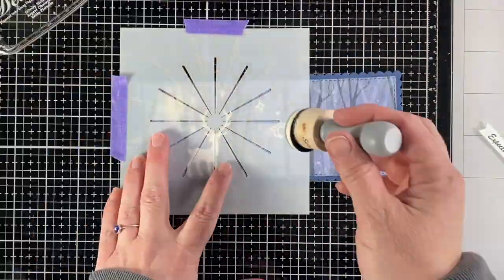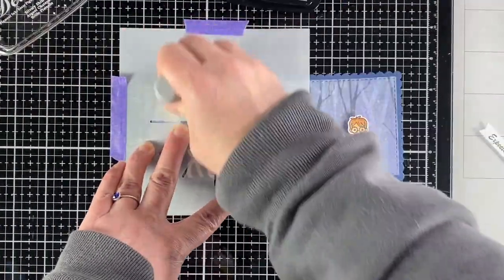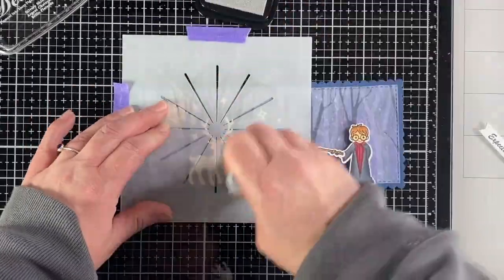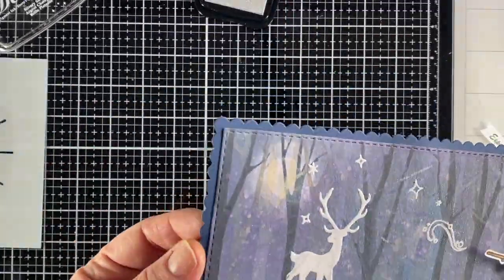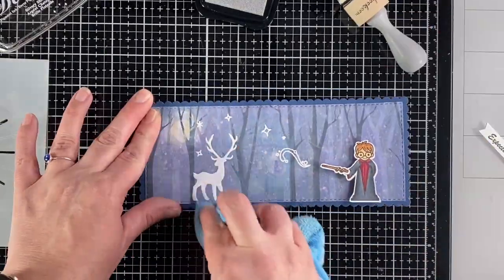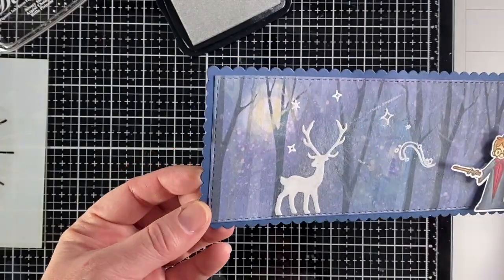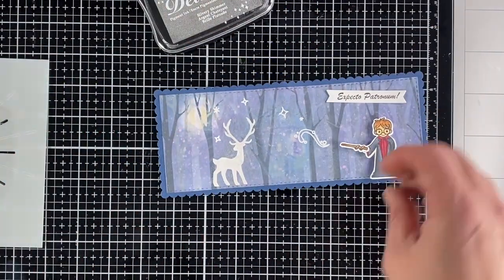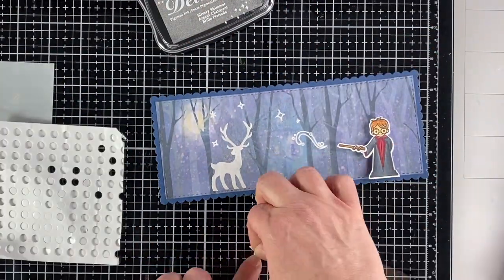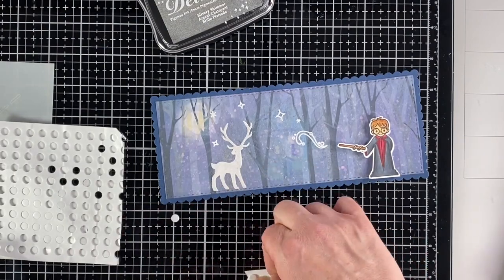Then as you can see that was when I went back and added a little bit of the silver. I also added some of the silver to the stag because the stag is supposed to be a silvery misty thing. Then the spell that Harry Potter said when he was conjuring up his Patronus was expecto patronum and so that's what my sentiment says.